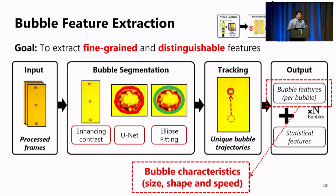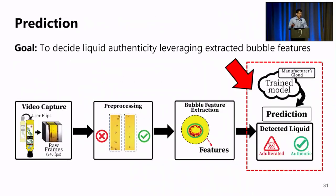You can refer to our paper for the full processing pipeline. For the prediction module, we use this to decide liquid authenticity, leveraging previously extracted bubble features, utilizing assembled machine learning classifiers — specifically, adaptive boosting.